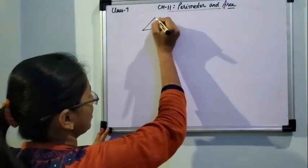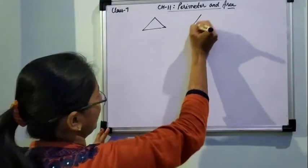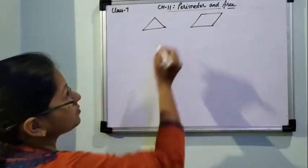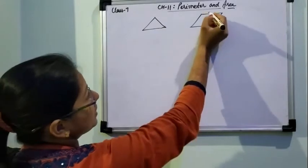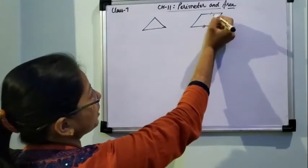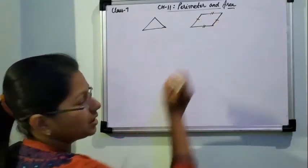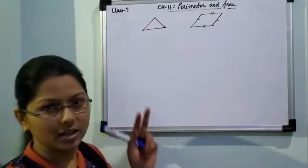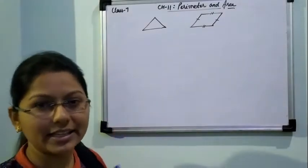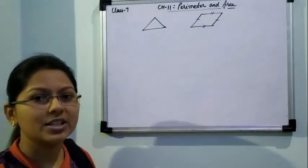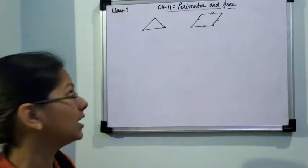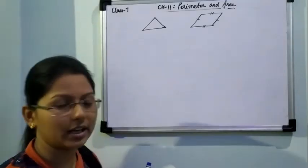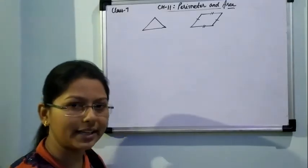This is a triangle and this one is a parallelogram. A parallelogram is a shape in which opposite pairs of sides are parallel to each other. A triangle, on the basis of sides, can be an equilateral triangle, scalene triangle, or isosceles triangle. And on the basis of angle it can be an acute angle triangle, obtuse angle triangle, or right angle triangle.